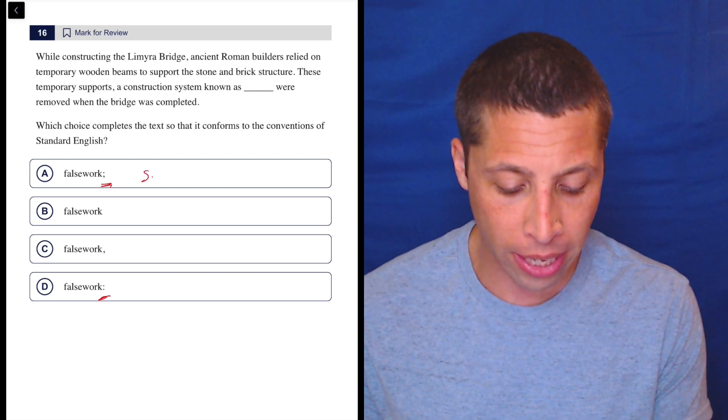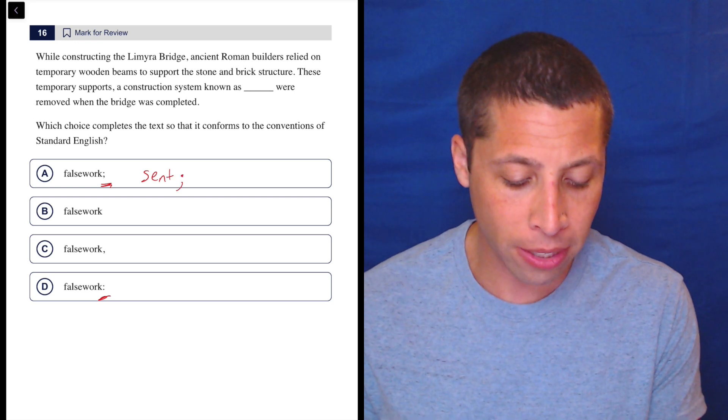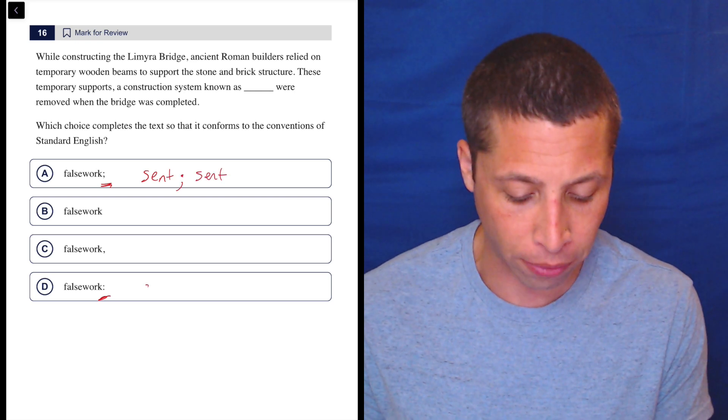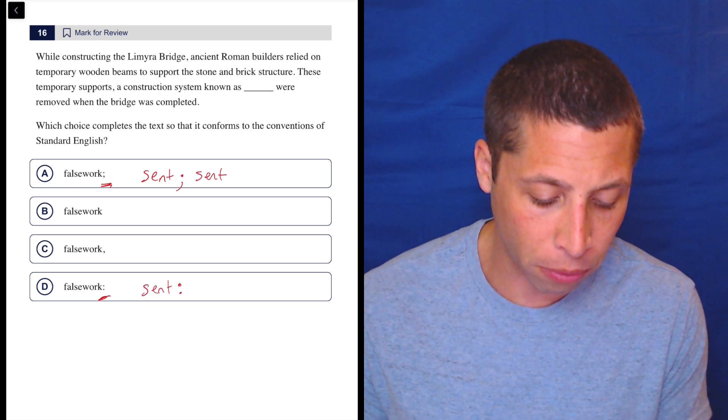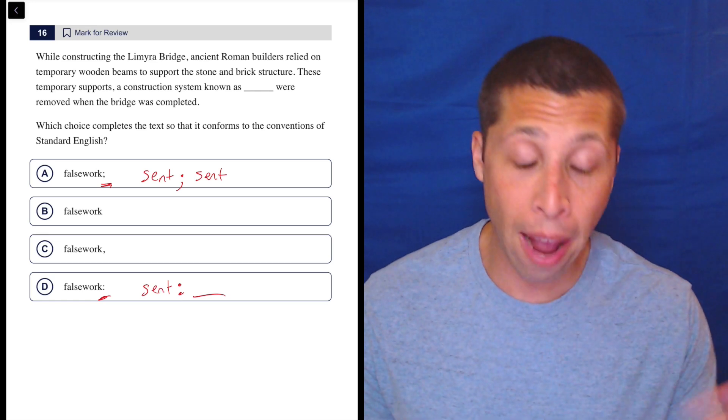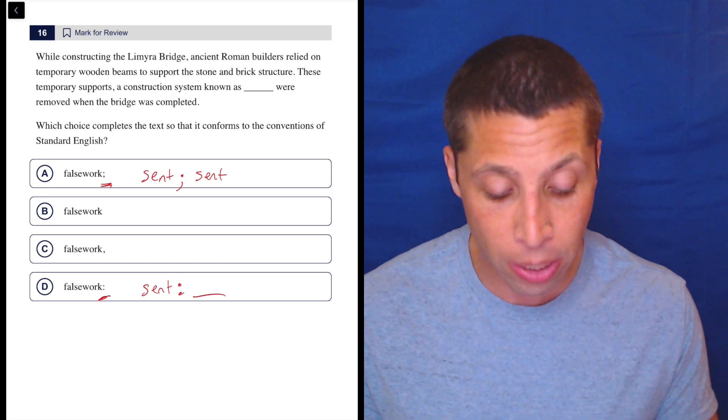In most cases, we're using a semicolon to separate two complete sentences, so we can check for that. Now, the colon's a little bit more flexible. That just precedes a sentence beforehand. Afterwards, we could have a sentence, but we don't need one. But let's just check.